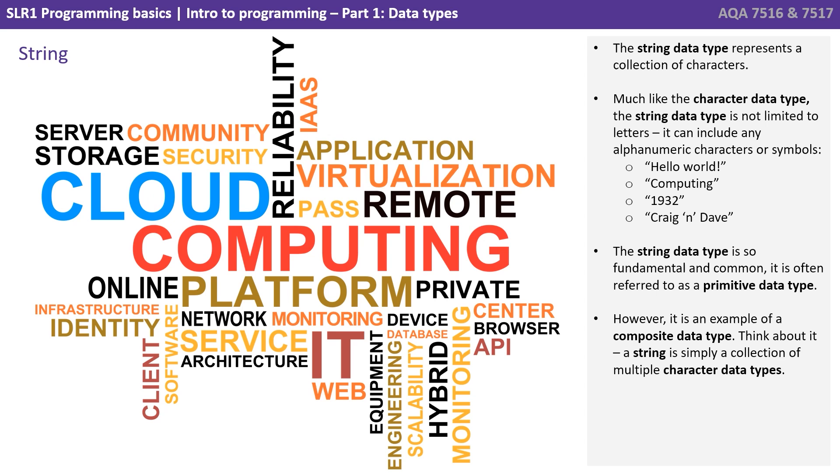Next, we have the string data type, which represents a collection of characters. Much like the character data type, the string data type is not limited to letters. It can include any alphanumeric characters or symbols. The string data type is so fundamental and common, it's often referred to as a primitive data type. However, this is an example of a composite data type. Think about it, a string is simply a collection of multiple character data types.